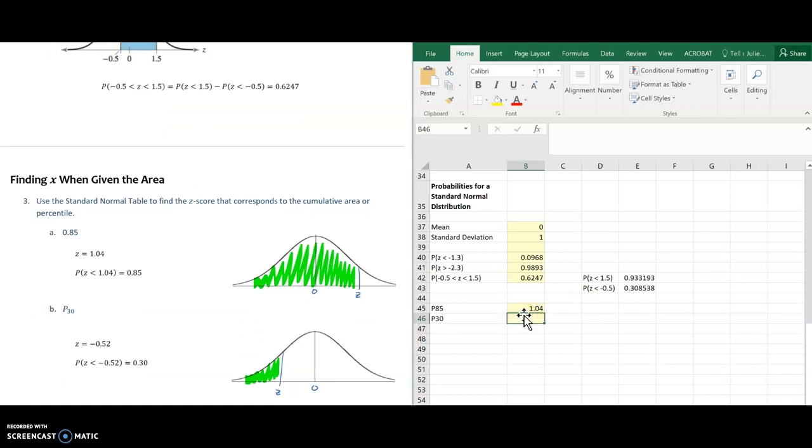And one last example. It's 30th percentile. So same thing, norm.s.inverse. And 0.30 for 30%. And there's my z-score of negative 0.52. Thank you.